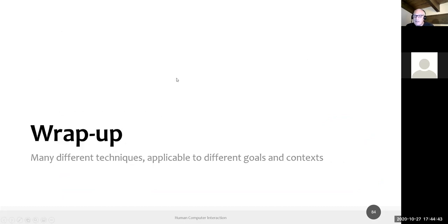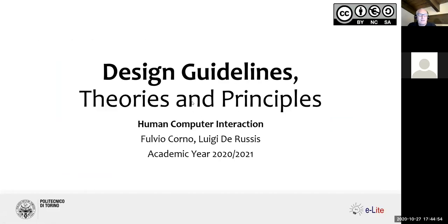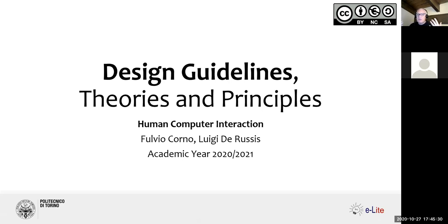We'll close the discussion on prototyping techniques here and start the new chapter on design guidelines, theories, and principles. We are starting the actual creative phase. Prototyping is still part of exploration, but for exploring, defining, creating, or making hypotheses about a user interface, we should follow some rules and suggestions. There are no strict commandments, but there are many criteria.